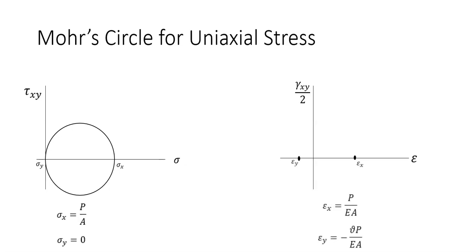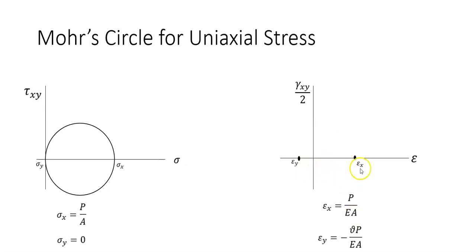We can calculate normal strain in the x-direction and y-direction. In the x-direction, it would be P over EA, and in the y-direction, it would be negative nu times P over EA, where nu is Poisson's ratio. With the center of the circle as the average of these two normal strains, you are able to draw Mohr's circle for strain.